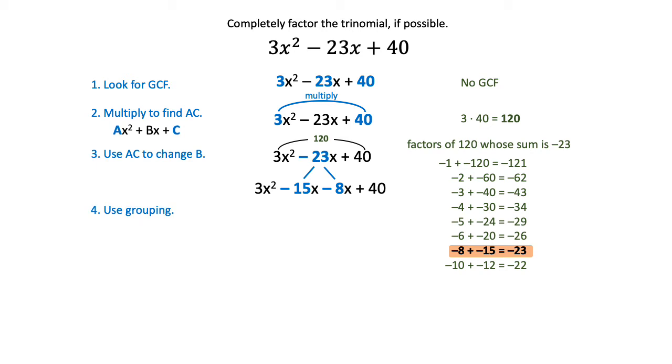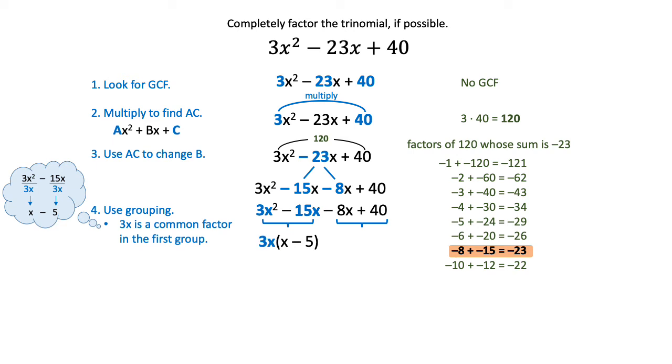The next thing we're going to do is use grouping to finish factoring this expression. So you've got your four terms, and you have your two groups. In the first group, 3x is a common factor, and when you divide 3x from those two terms, you're left with x minus 5. So I'm going to put the 3x out front and put parentheses around x minus 5.